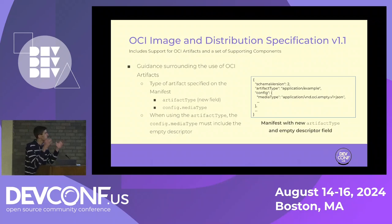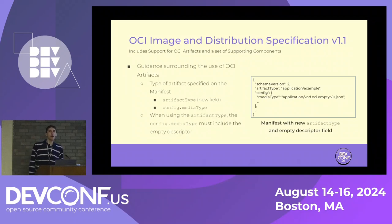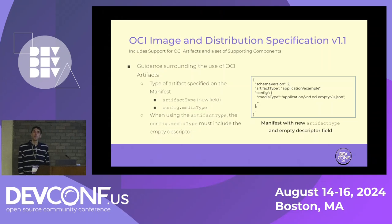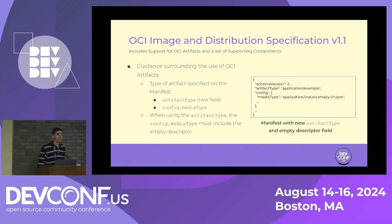OCI 1.1 finally provided clearer guidance on making use of artifacts. It allows you to specify the artifact type via either a new artifact type field on the image manifest, or via the config.media type. If using the artifact type top-level argument, the config.media type must include an empty descriptor — basically an empty JSON file, nulled out.